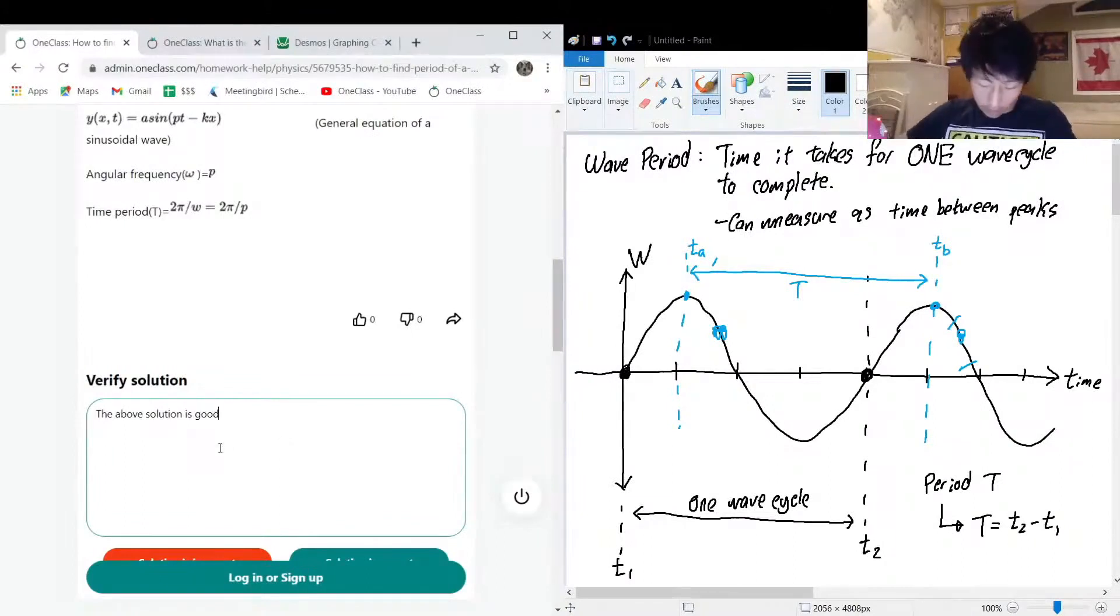It's unclear as to why p was used to represent angular frequency instead of omega.